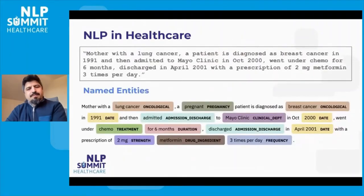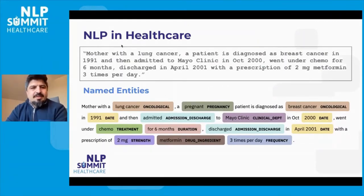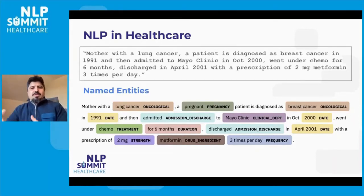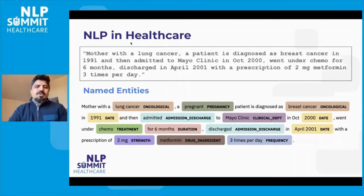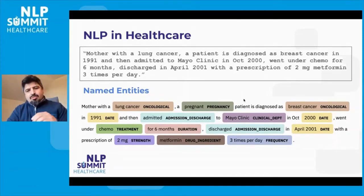For NER, we try to find the target entities given the sentence. The NER algorithm we use in Spark NLP is the BiLSTM-CNN-Char architecture. We create features about each word using transfer learning, and then feed these features into a deep learning architecture to extract entities. In a simple sentence, we extract more than 10 different entities that we can try to put on a timeline using the other NLP tools.